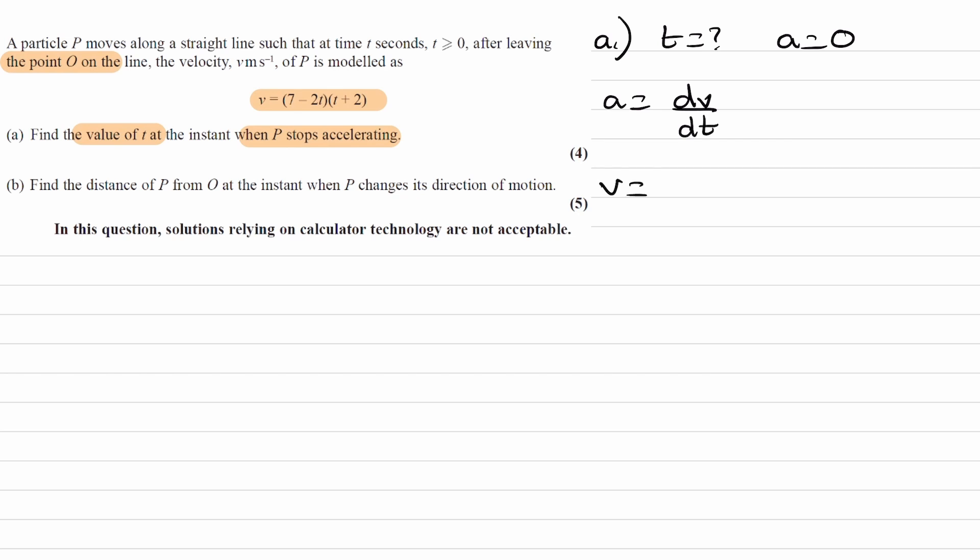Velocity, if we expand out the equation that we have over here, becomes minus 2t squared plus 7t minus 4t, which is plus 3t plus 14. So acceleration, which is dv dt, would then be minus 4t plus 3.